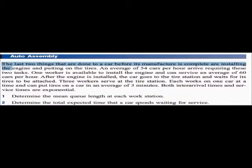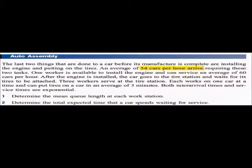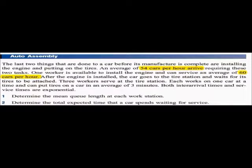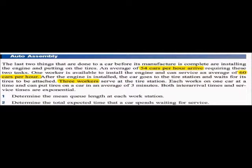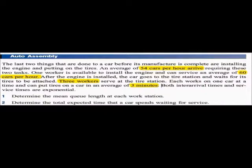The last two things done before a car's manufacture is complete are installing the engine and putting on the tires. An average of 54 cars per hour arrive requiring these two operations. One worker is available to install the engine and can service an average of 60 cars per hour. After the engine is installed, the car goes to the tire station where three workers each serve one car at a time and can put tires on a car in an average of 3 minutes. Both inter-arrival times and service times are exponential.